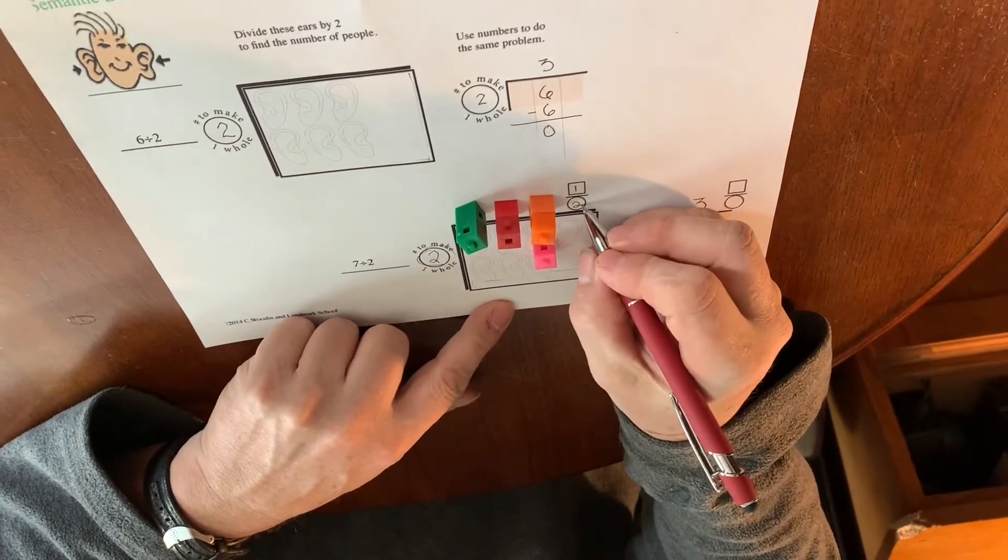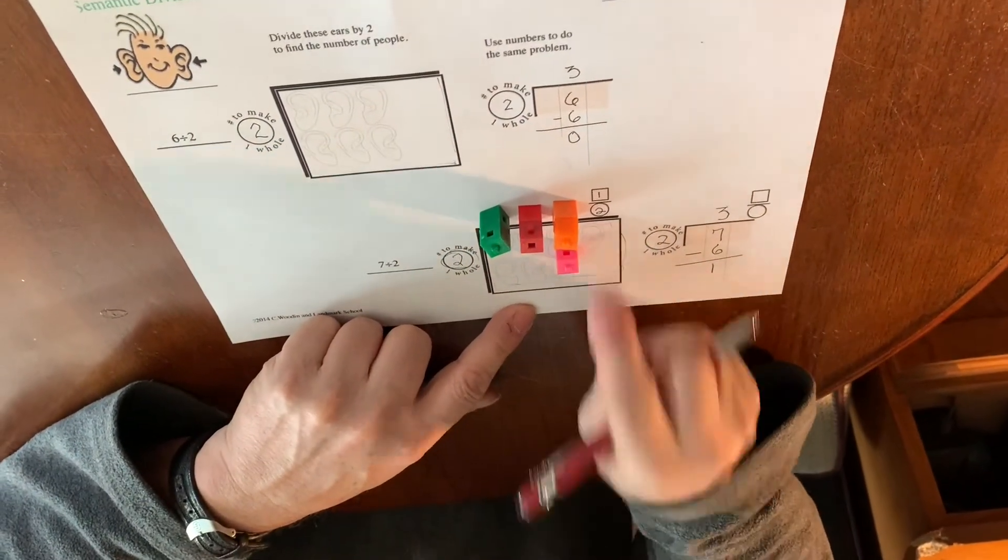One ear, and it takes two to make a whole. So we have three and one half whole people.